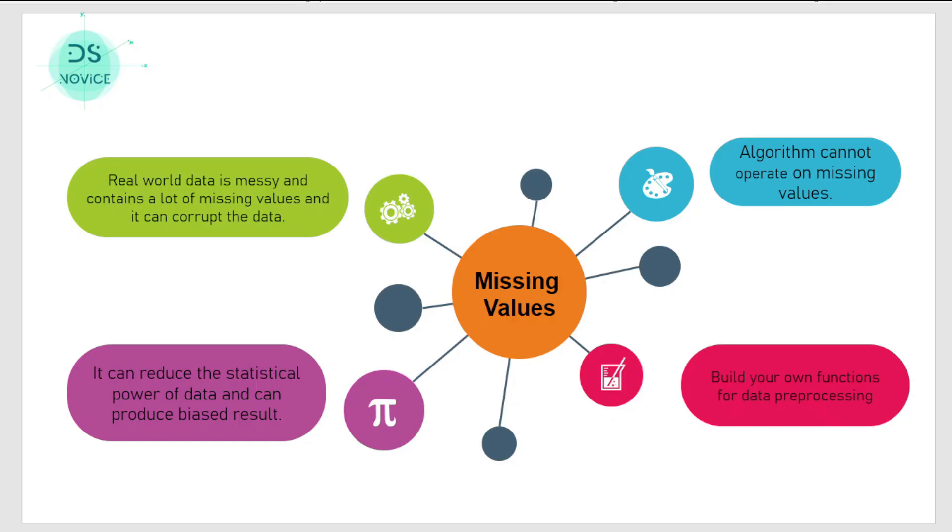In applied space or in real world, data is really messy and contains a lot of missing values. Missing values means that for a particular observation we do not have any value. For example, you ask people to fill a form and in the gender column someone kept it blank, or take the example of salary - you're in a company asking employees to fill a form and some of them have kept the salary column blank.